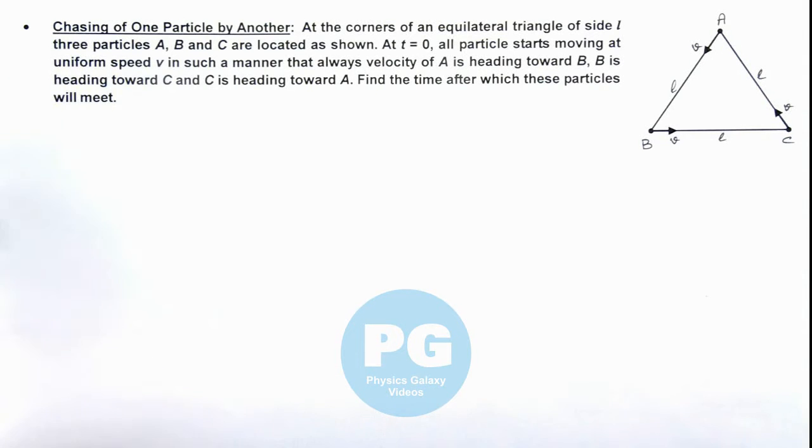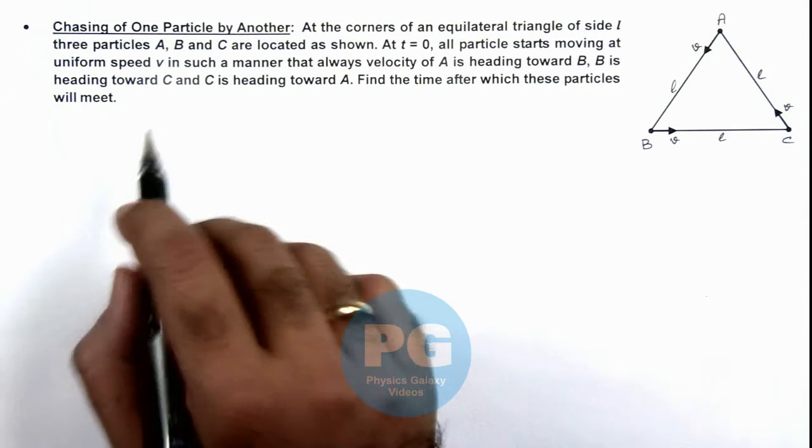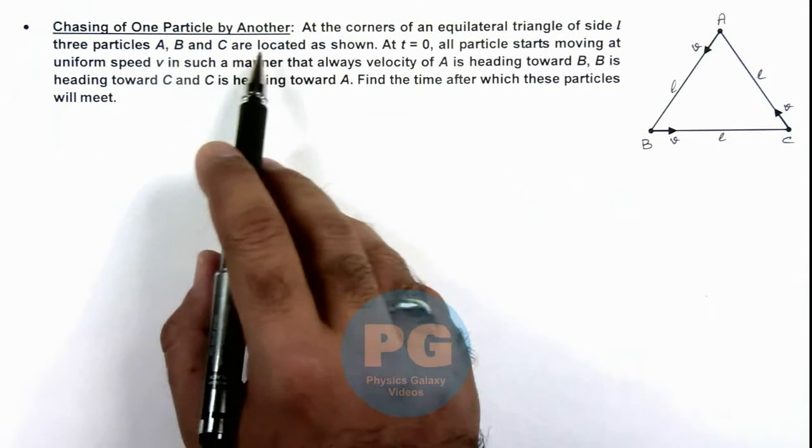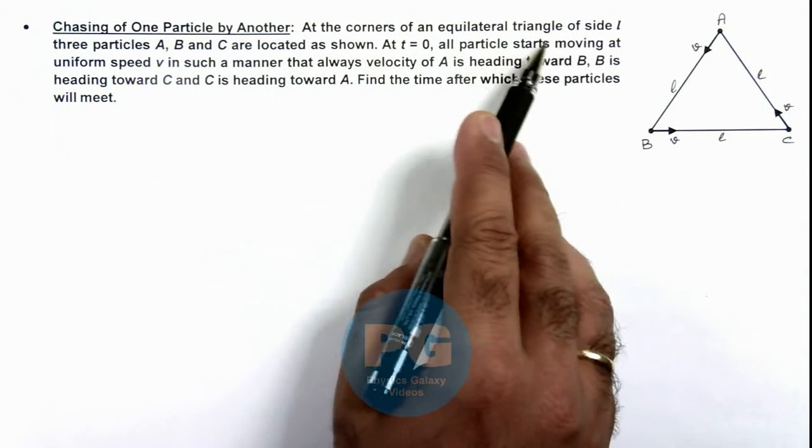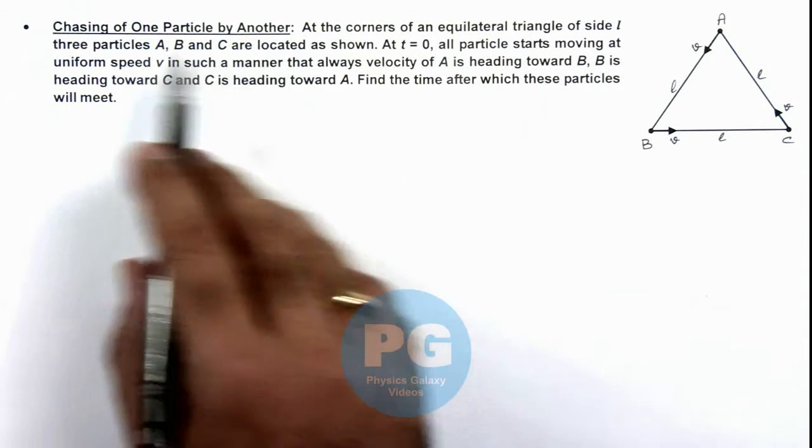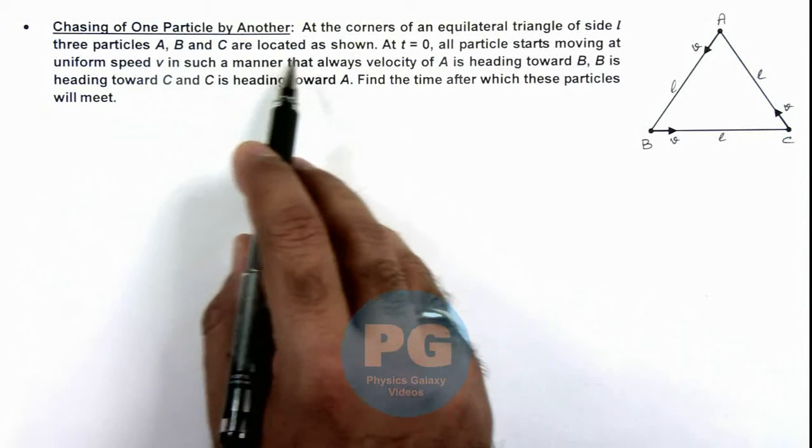In this illustration, we'll discuss a situation when a particle chases another. Here we are given that at the corners of an equilateral triangle of side l, three particles A, B, and C are located as shown.